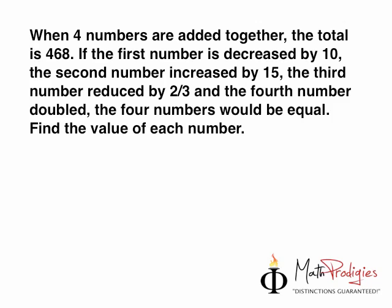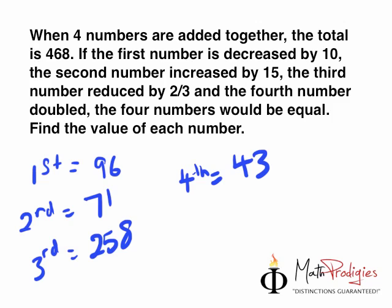Wow, this looks pretty difficult to me. Does it to you? Alright, for those of you who got the answer, the answers are: the first number is 96, the second number is 71, the third number is 258, and the fourth number is 43. Now, if you got it right, I'm gonna give you a big high five. You are a math prodigy. You are really good at this math thing.